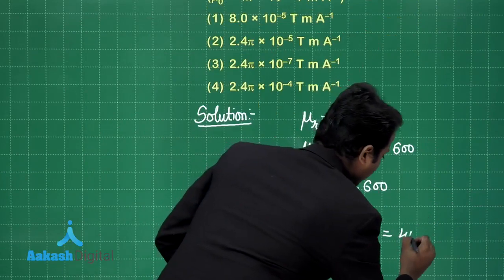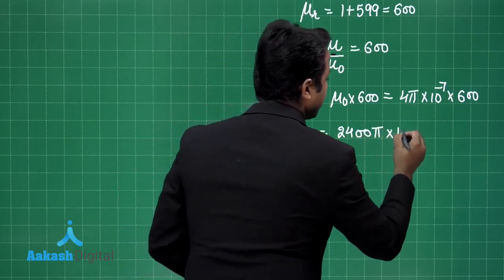So this is 4π × 10^-7 × 600. If I solve it further, I will get μ equals 6 × 4 = 24 × 100 = 2400, so 2400π × 10^-7. Clearly, μ will equal 2.4π × 10^-4 tesla meter per ampere.